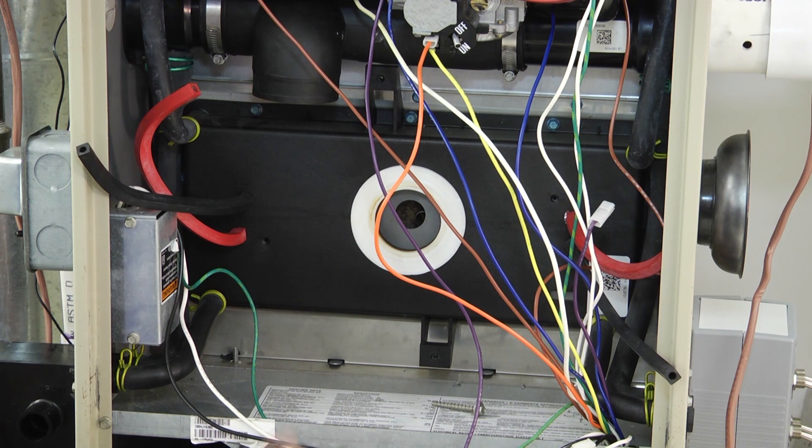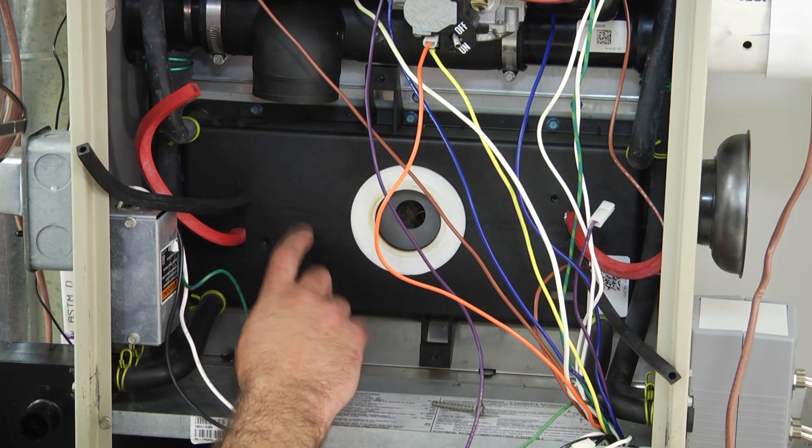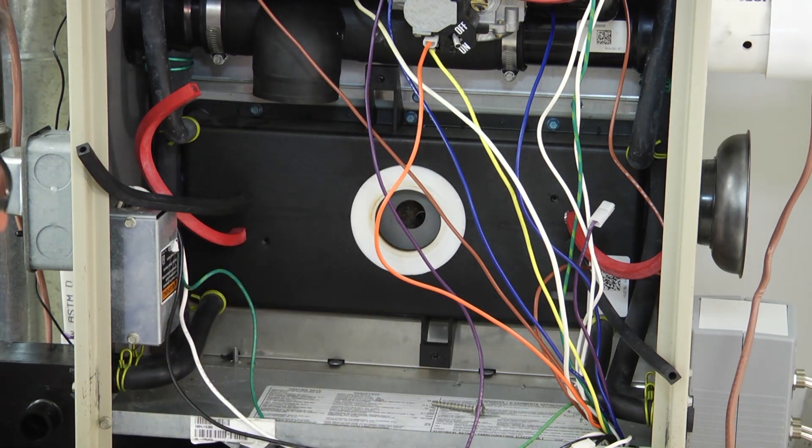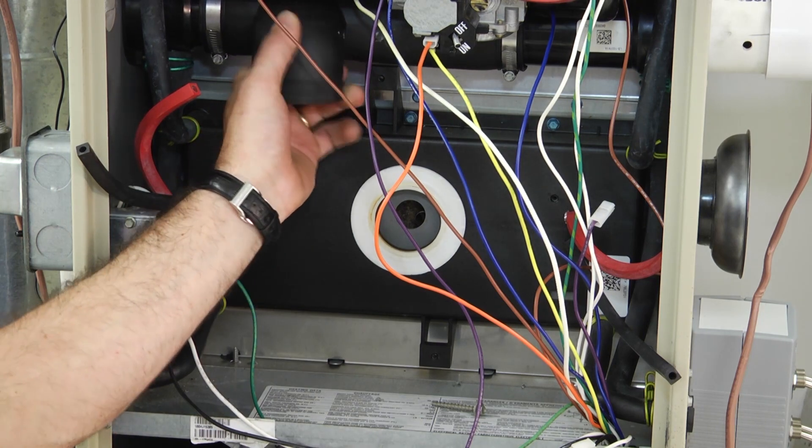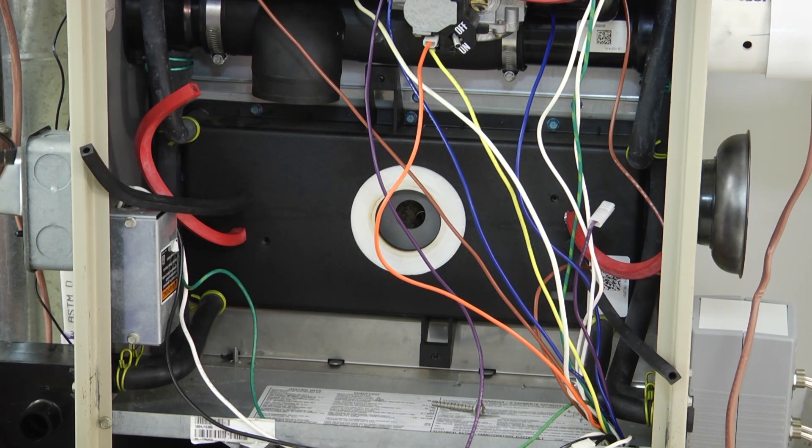So it's quite simple. Again, locate the screws that are holding the motor to the collector box. In this case we had that one clamp that was holding the motor to the rubber boot here, your exhaust. And you're done.